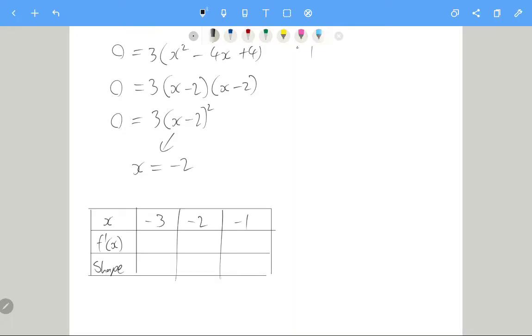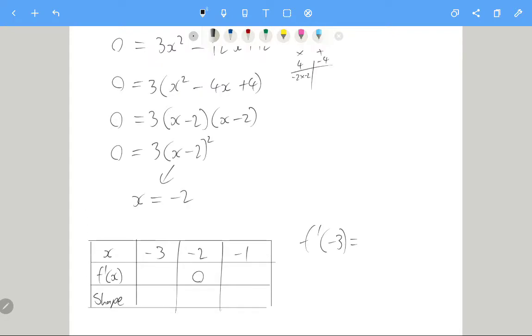So the suggestion is always to choose a point to the left of it and a point to the right of it. So I've chosen -3 to the point to the left and -1 to the point to the right. We know that the gradient at -2 is 0. Let's work out the gradient at -3 and -1. I'm going to use the factorized form because it's a little bit easier to substitute in with.